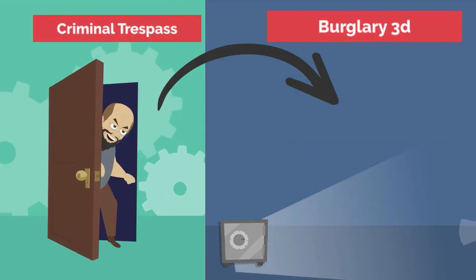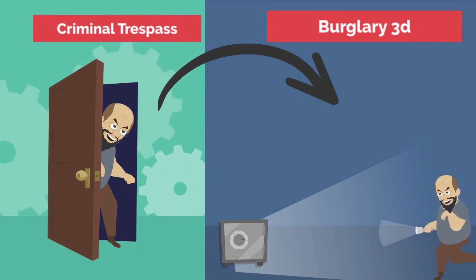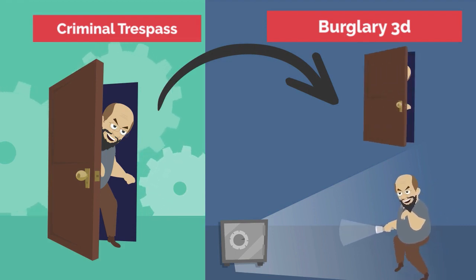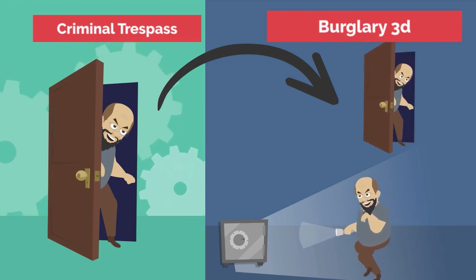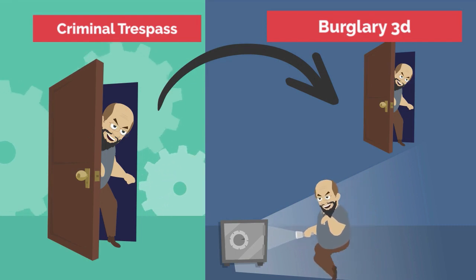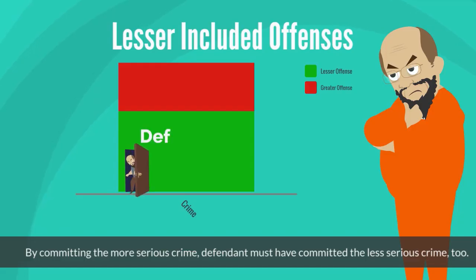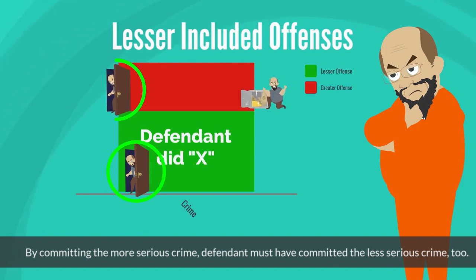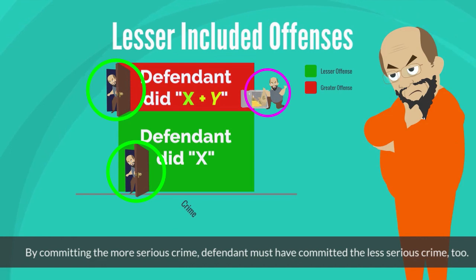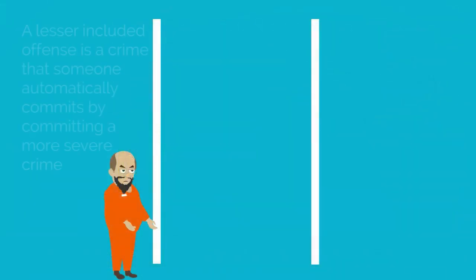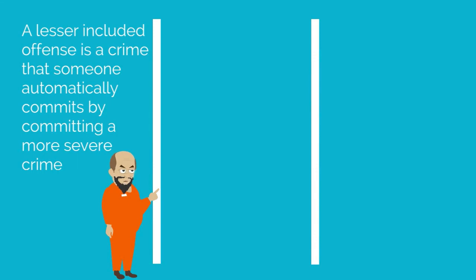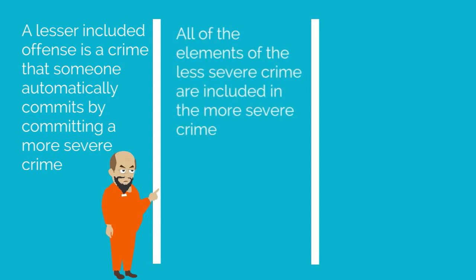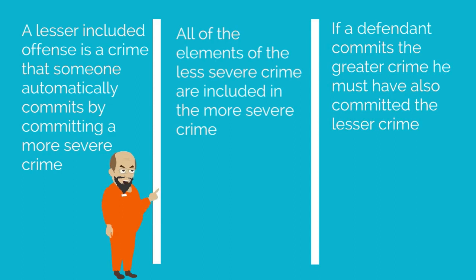That is, to prove criminal trespass, the state only needs to show that David unlawfully entered the building. But to prove third-degree burglary, the state will also have to prove that David unlawfully entered the building in order to steal from the safe, in order to commit a crime within the building. The state will have to prove the same elements as criminal trespass, but will have to prove the additional elements to satisfy third-degree burglary. To summarize, a lesser-included offense is a crime that someone automatically commits by committing a more severe crime. All the elements of the less-severe crime are included in the more-severe crime. If a defendant commits the greater crime, he must have also committed the lesser crime.